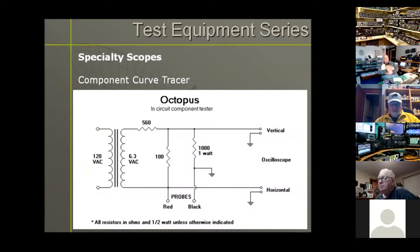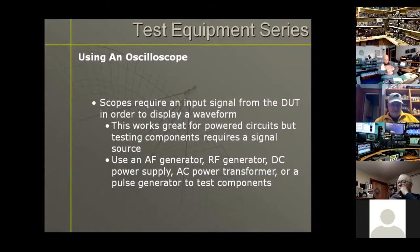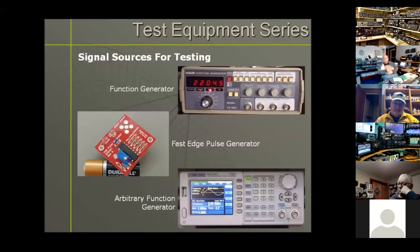To use an oscilloscope you have to have some sort of input signal — either from a circuit you're working on such as an audio circuit or an RF envelope from a transmitter. If you're working with components or testing non-powered circuits you need some sort of signal coming in, and for that you can use an AF generator, RF generator, DC power supply, pulse generator, a transformer, or other source to get your signal into your components.